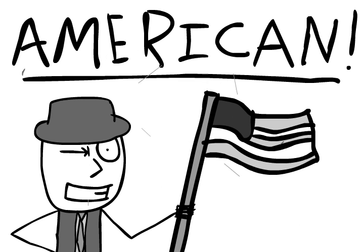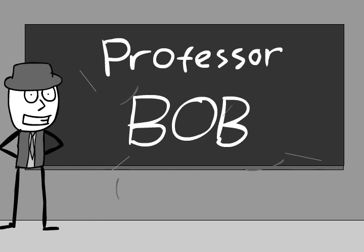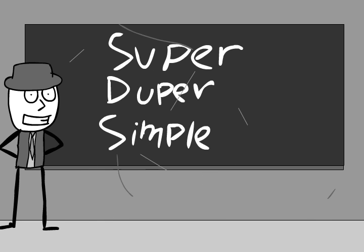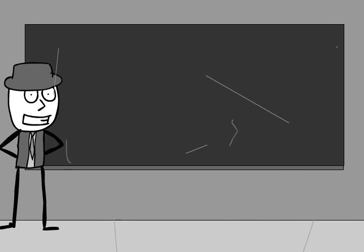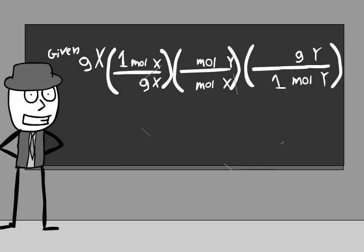Let's see if Bob's technique can straighten you out. Bob's super-duper simple technique is no more than a simple unit conversion. Just as you regular hard-working Americans convert gallons to fluid ounces, grams of X can be converted to grams of Y.